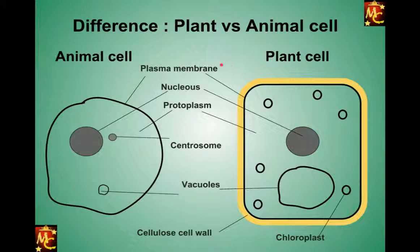Another similarity is that both cells have a nucleus, and their DNA is present inside the nucleus. All genetic material is always present in the nucleus in both cell types. So they both have a plasma membrane, a nucleus, and they both have protoplasm — sometimes I call it cytoplasm and sometimes protoplasm.